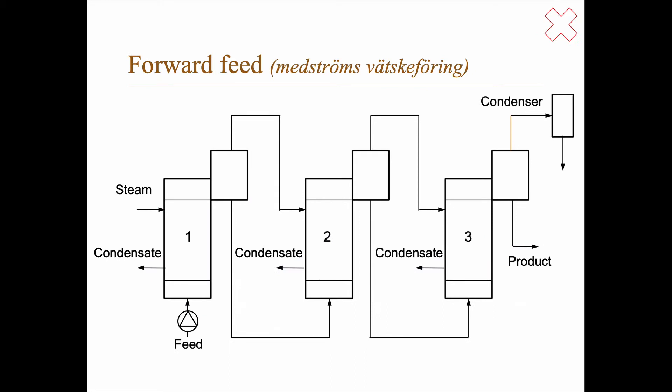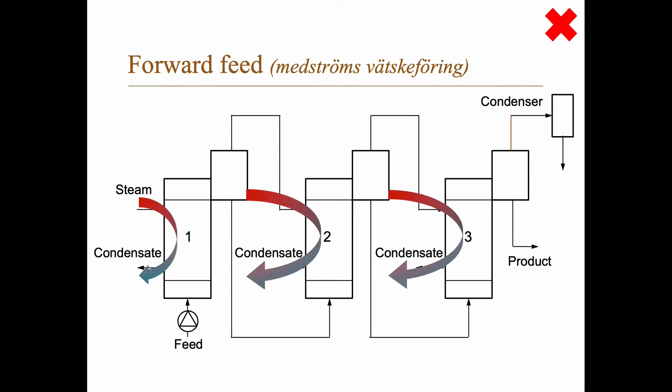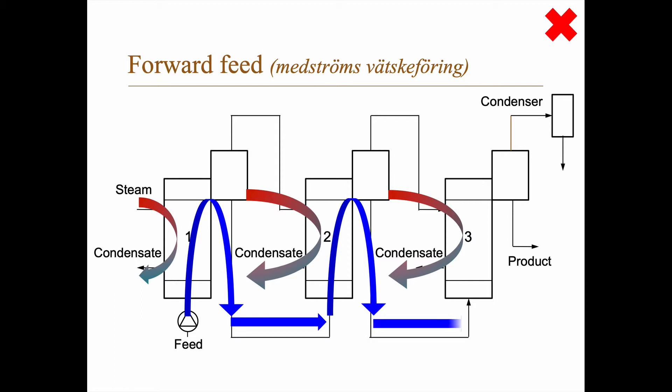In forward feed, the feed moves in the same direction as the steam. The steam goes the same way as always, but the feed goes into the first evaporator, then continues into the second, and then into the third. Because the steam and the feed follow the same overall pattern, we call it forward feed — it looks a bit like co-current flow.